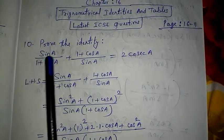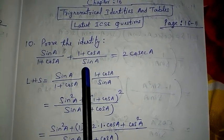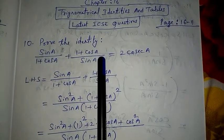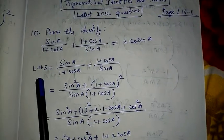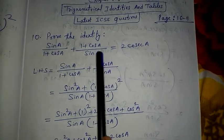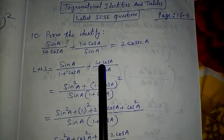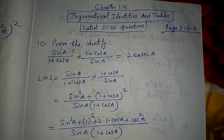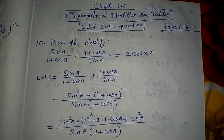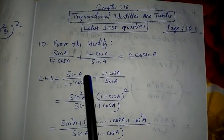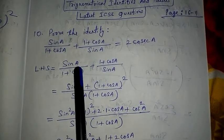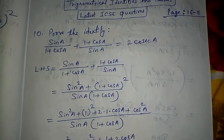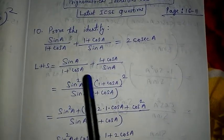In the LHS we have sinA/(1+cosA) + (1+cosA)/sinA = 2cosecA. This is the LHS portion and this is the RHS portion. We have to prove LHS equal to RHS. Taking the LHS portion: sinA/(1+cosA) + (1+cosA)/sinA. In this chapter, you should always try to make all the trigonometrical identities in sin and cos. But in this question it is already in sin and cos, so don't convert them — instead, do the LCM.